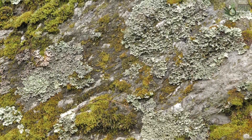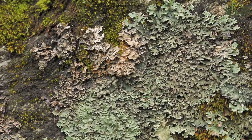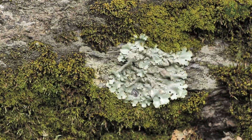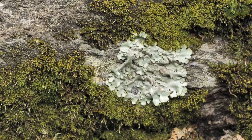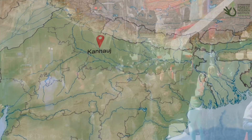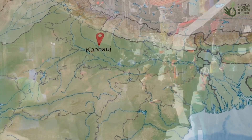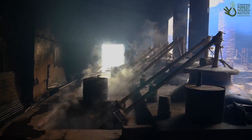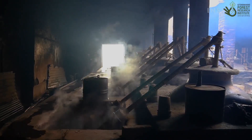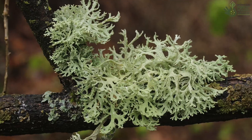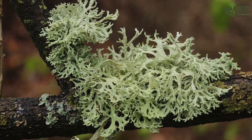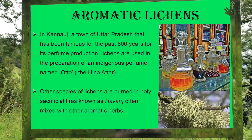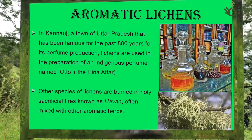These lichens provide a special fragrance to meat and other important vegetables. Kannauj, a town in the state of Uttar Pradesh, is famous for its perfume production. They use aromatic lichens in the preparation of an indigenous perfume.